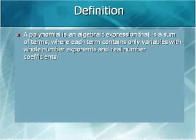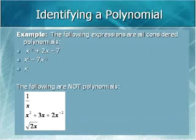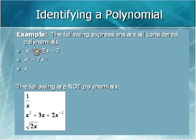By definition, a polynomial is an algebraic expression that is a sum of terms where each term contains only variables with whole number exponents and real number coefficients. For example, x squared plus 2x minus 7 has all real number coefficients — 1, 2, and negative 7 — and it has whole number exponents, 2 and 1.